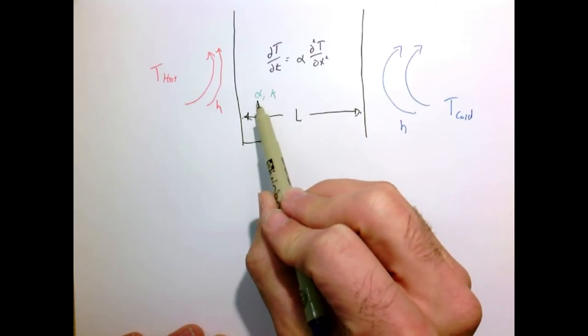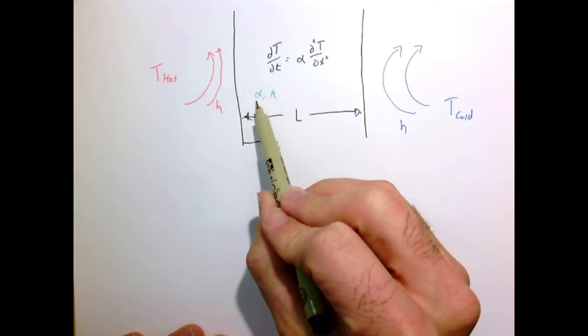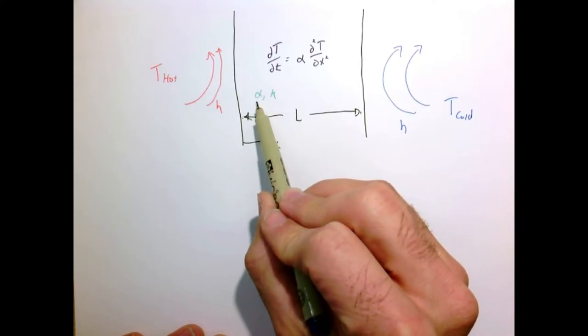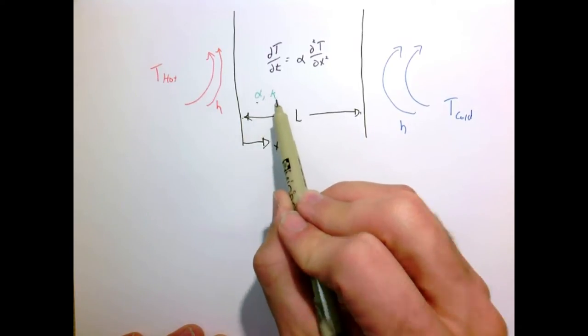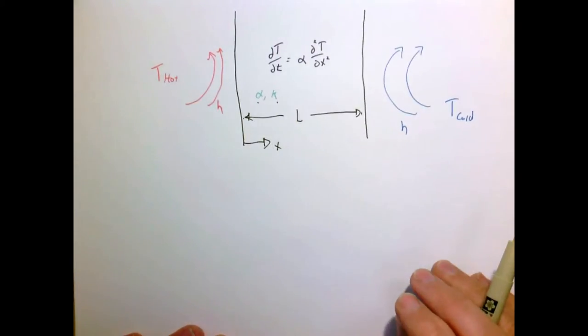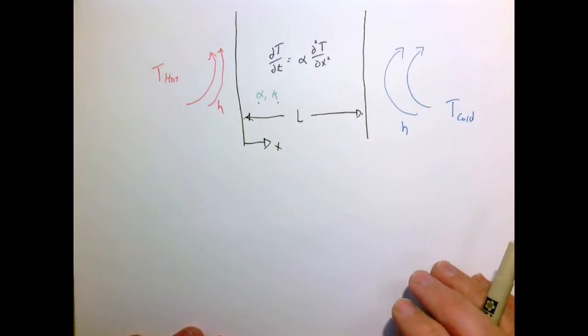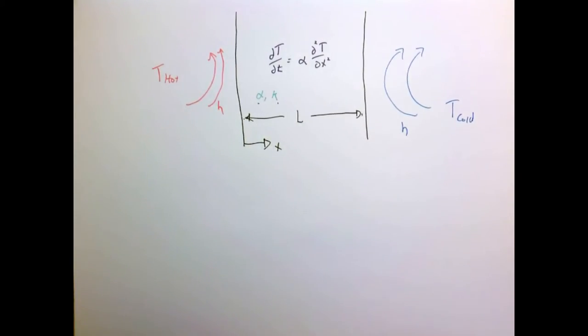My solid has material properties: alpha, the thermal diffusivity, and K, the thermal conductivity. To express this problem mathematically, I need to express the initial condition and the boundary conditions.